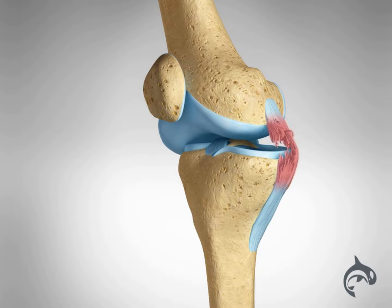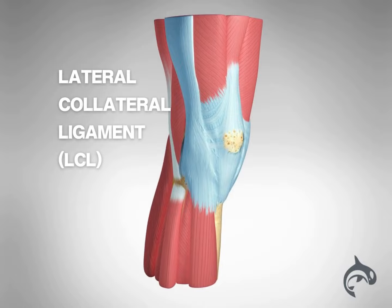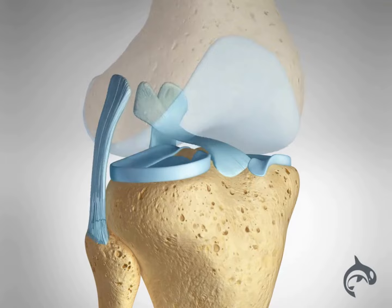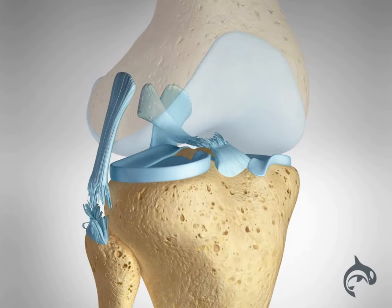The lateral collateral ligament, or LCL, is on the outer side of the knee and helps to stabilize the outside of the joint. Due to knee structure, the LCL is very rarely injured on its own. More commonly, LCL injuries are seen as multiple ligament injuries, like an ACL-LCL tear.